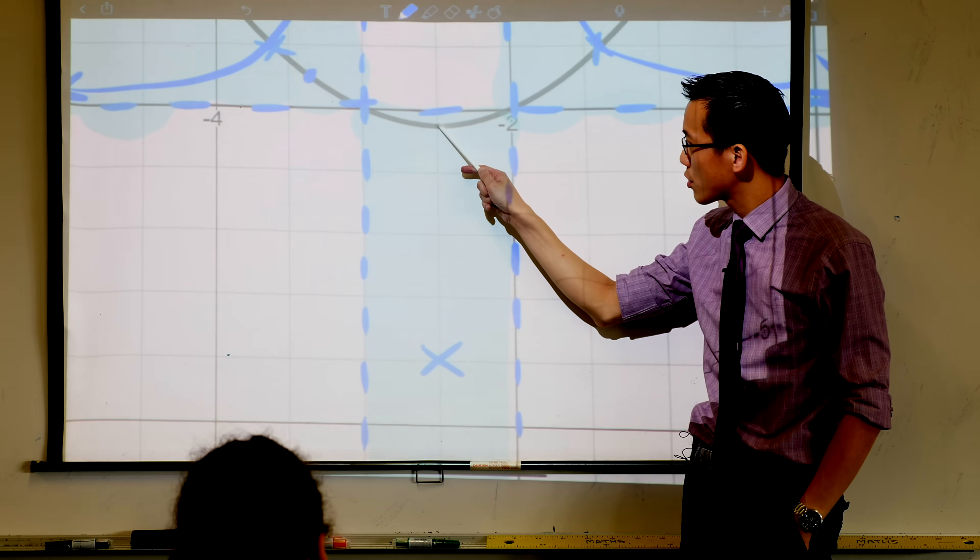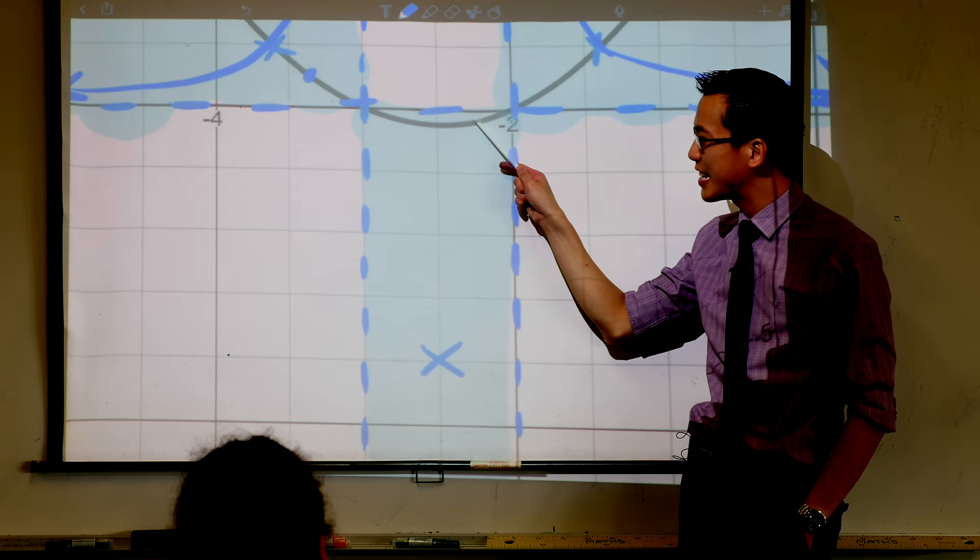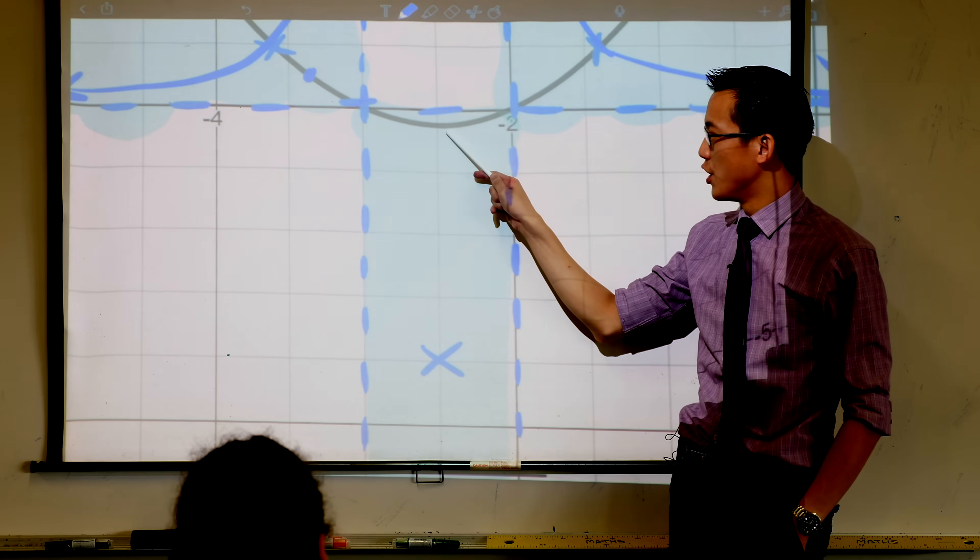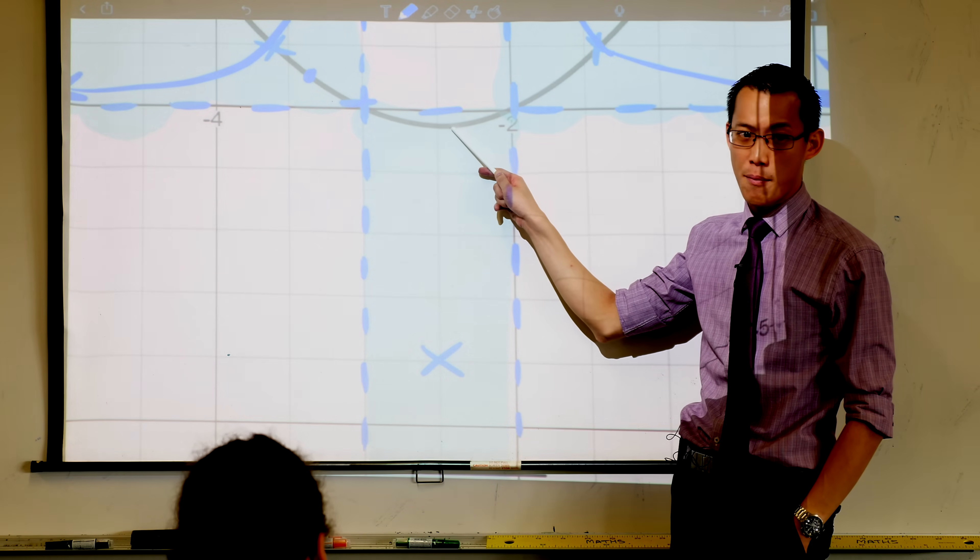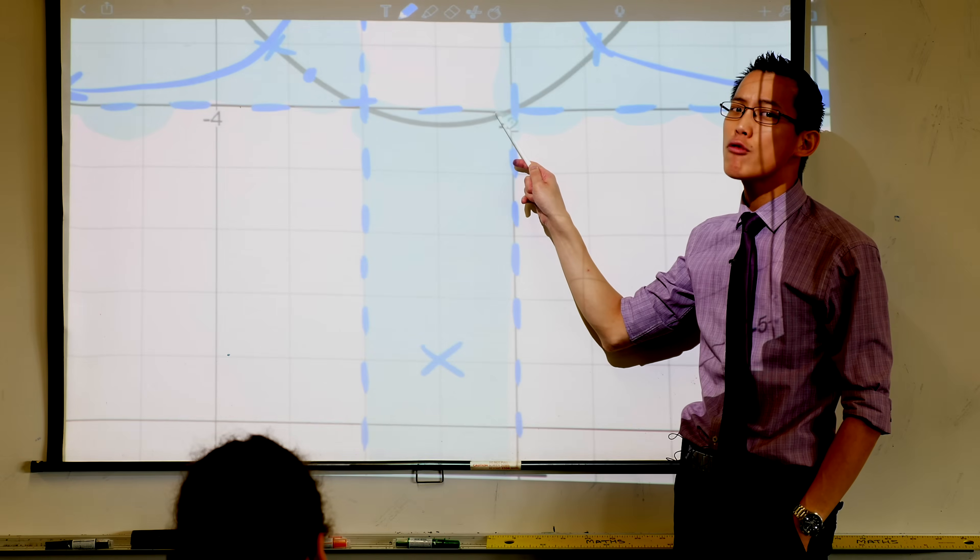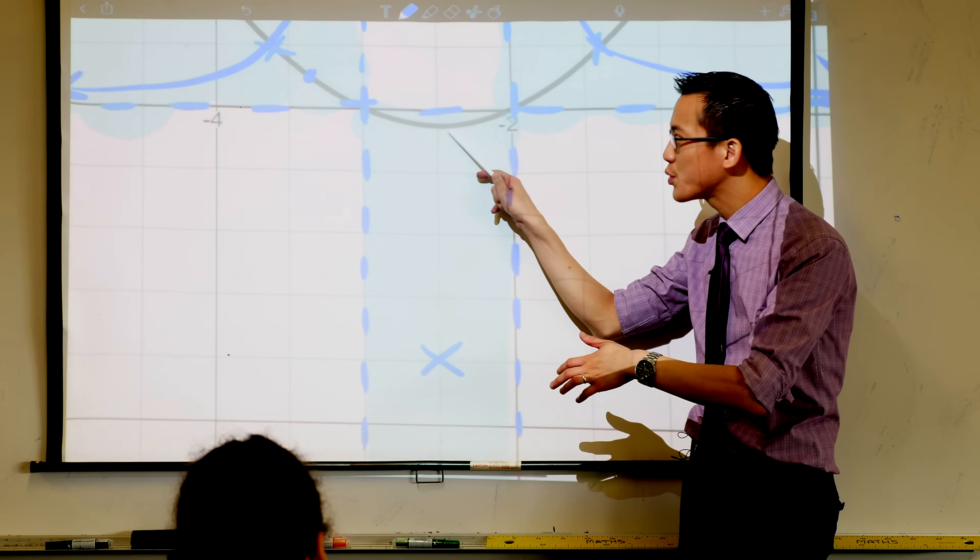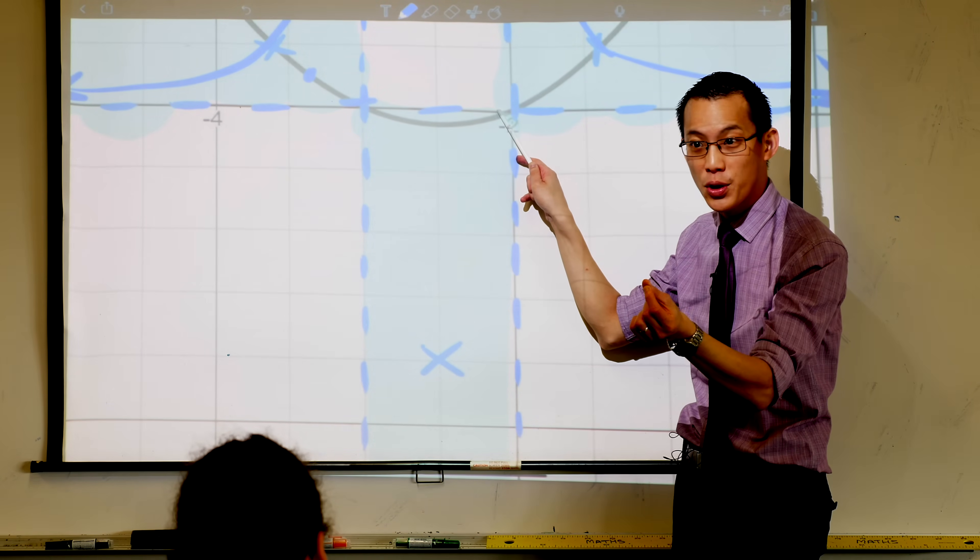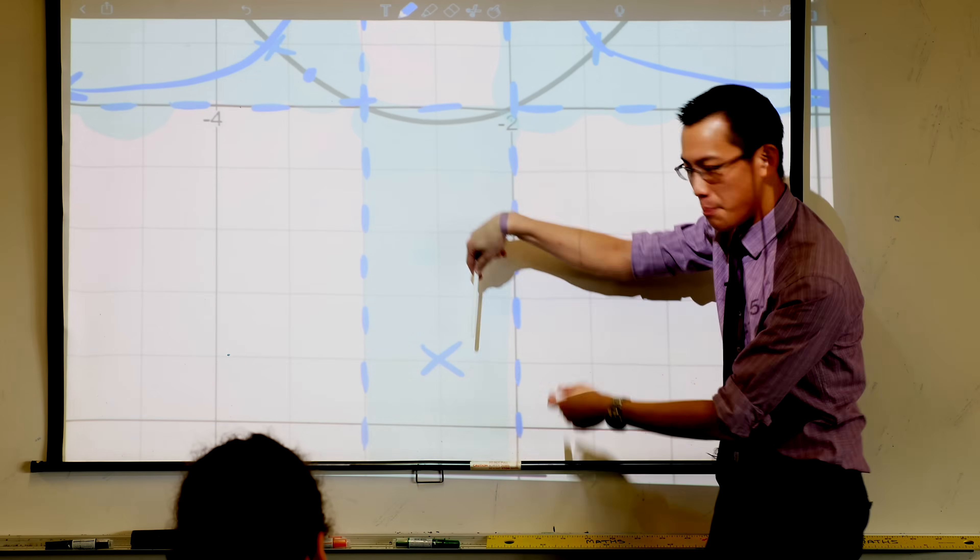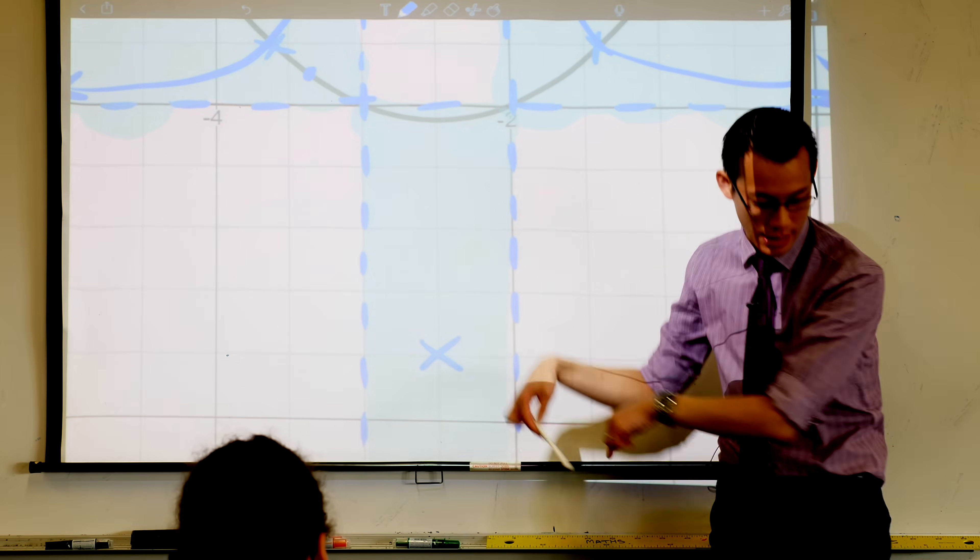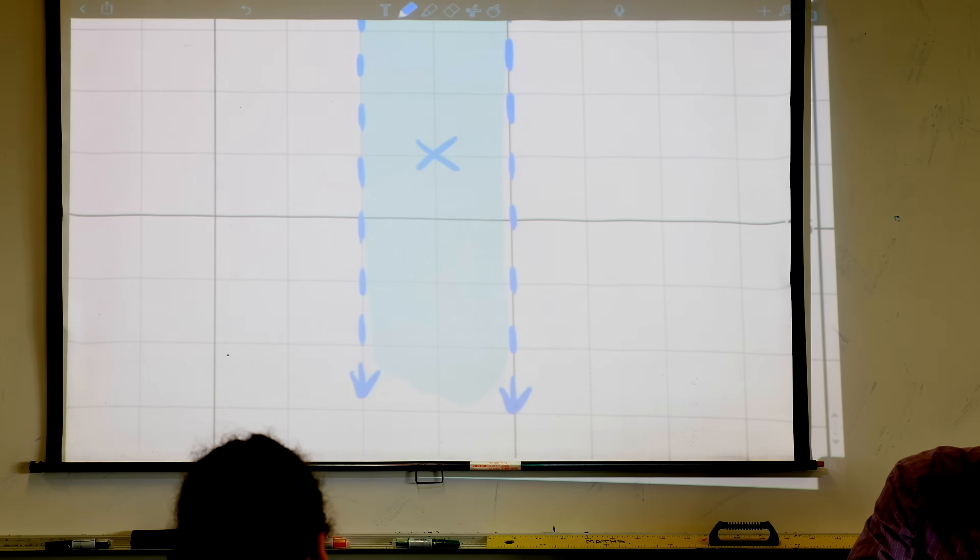But then as we go toward the right here, see how these values are getting teeny teeny tiny, like negative 0.1, negative 0.01 and so on. Because the original is getting smaller, the reciprocal is getting bigger but negative. Bigger but negative.